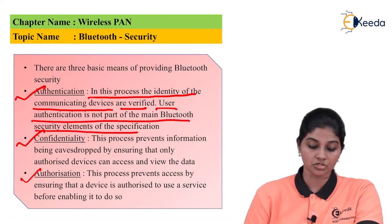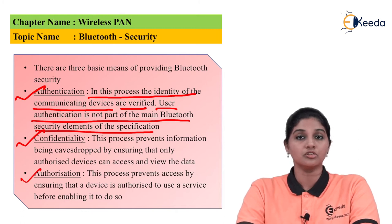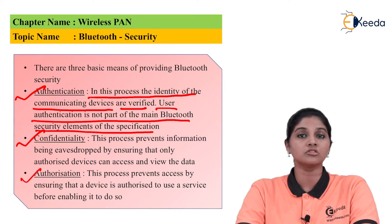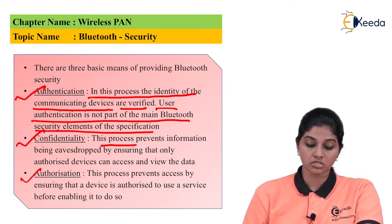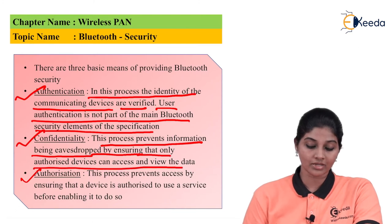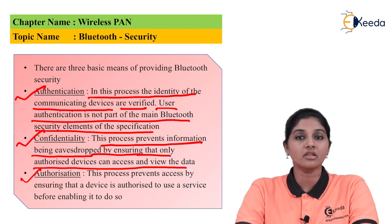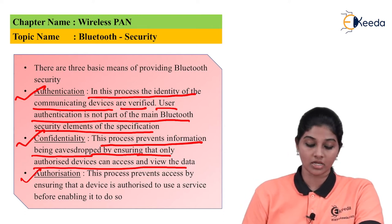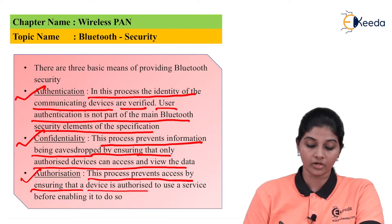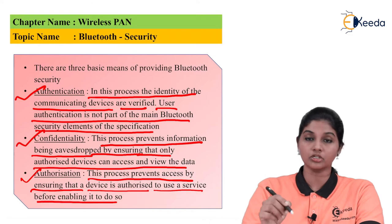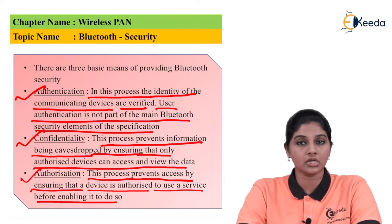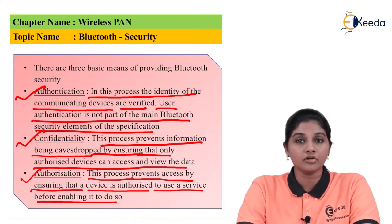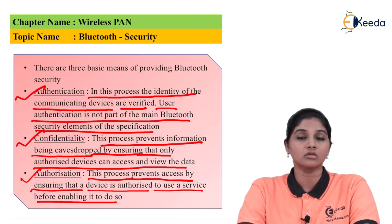User authentication is not part of the main Bluetooth security specification. In case of authentication, the user is required to verify that they are a valid and not unauthorized user. Confidentiality is related to the process which prevents information from being passively attacked, ensuring that only authorized devices can access and view the data. Authorization is the process which prevents access by ensuring that the device is authorized to use a service before enabling it to do so.